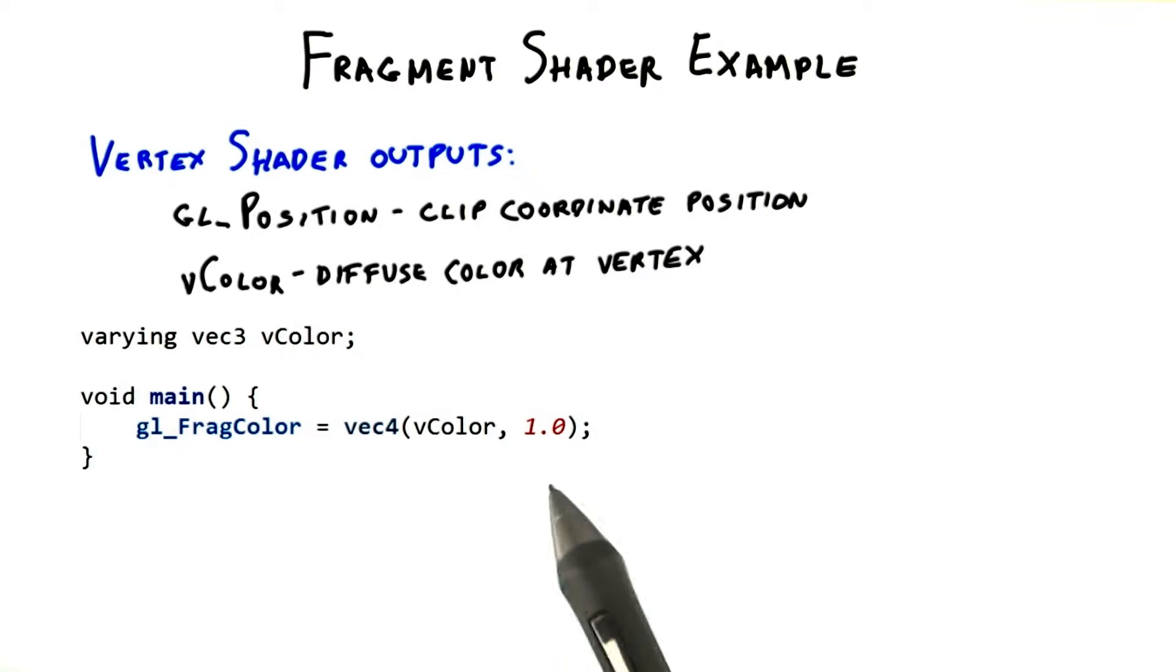Notice how the language elegantly understands vectors. vColor is a vector with three coordinates. We construct a glFragColor, a four-element vector, by using vColor and appending a number. GLSL knows what this means. In general, the language is very aware of common vector and scalar operations.